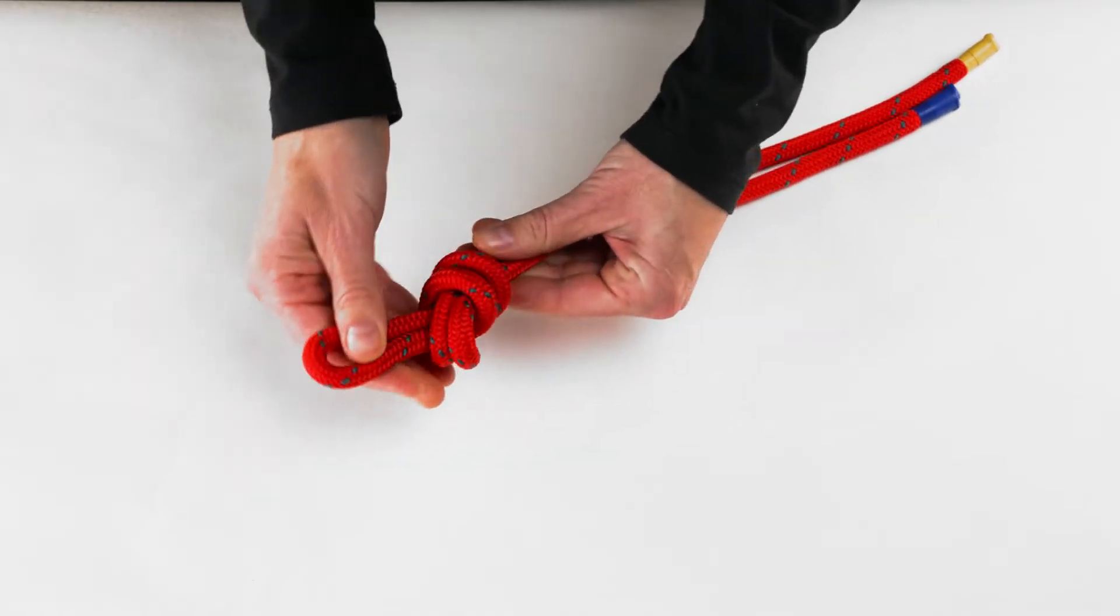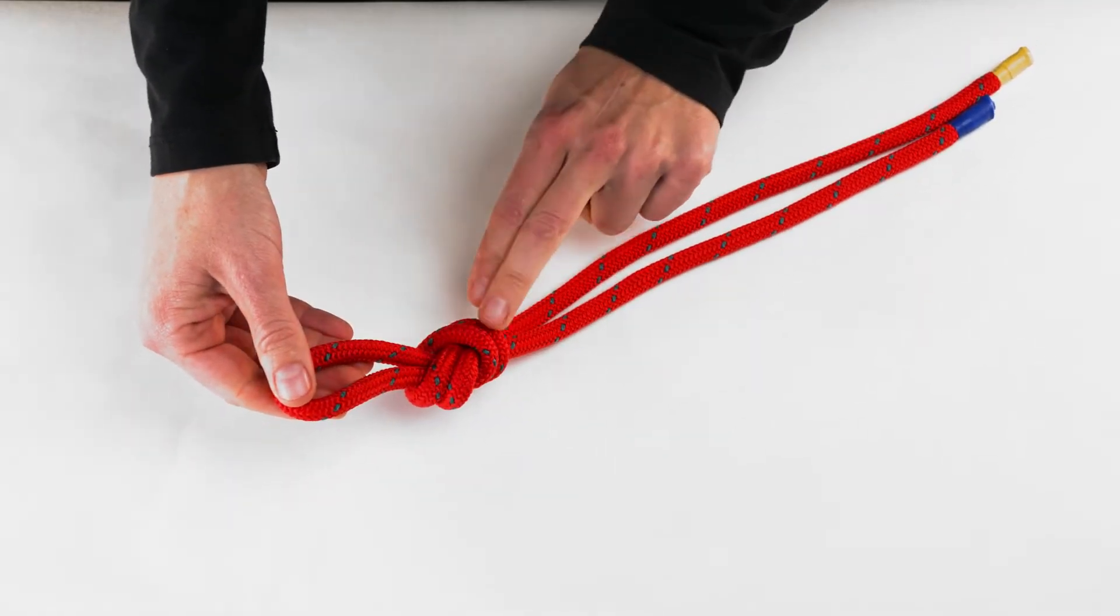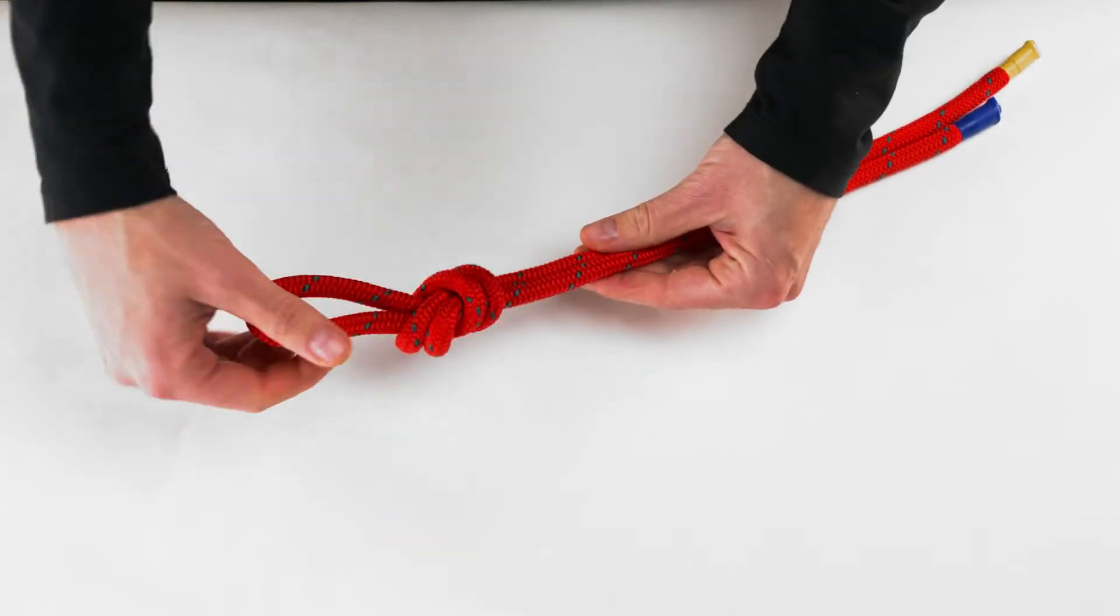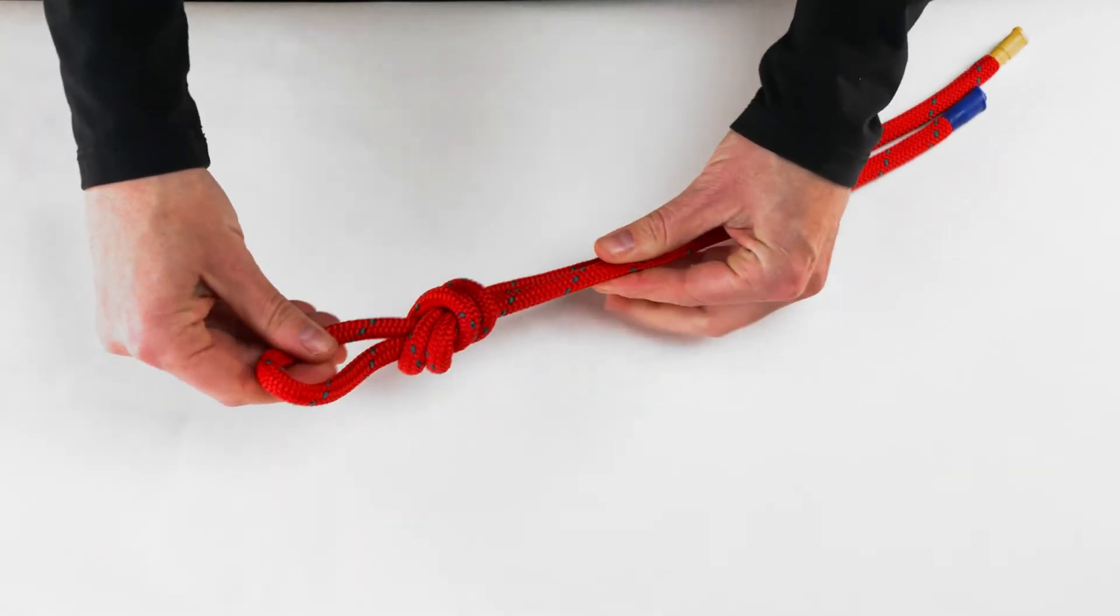Dress the knot by making the strands run parallel and pull each strand tight individually.